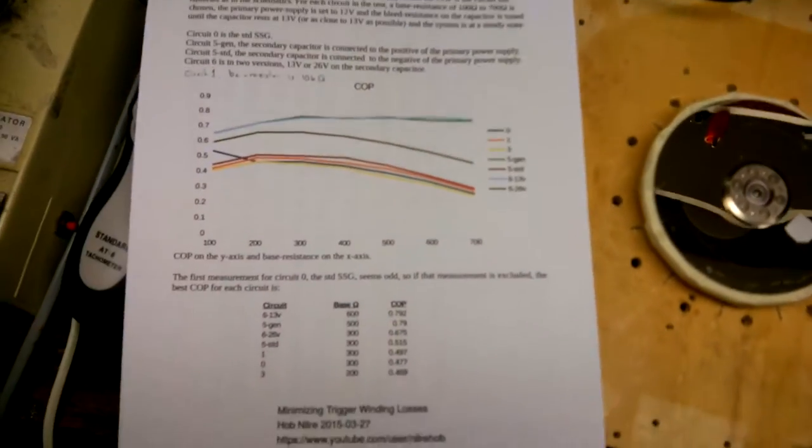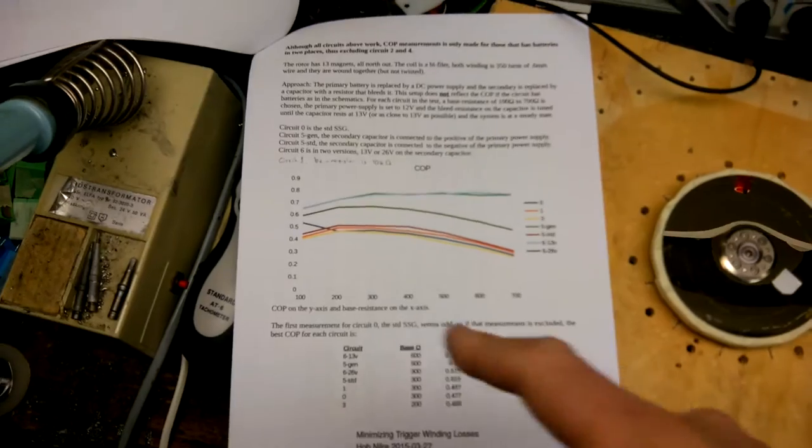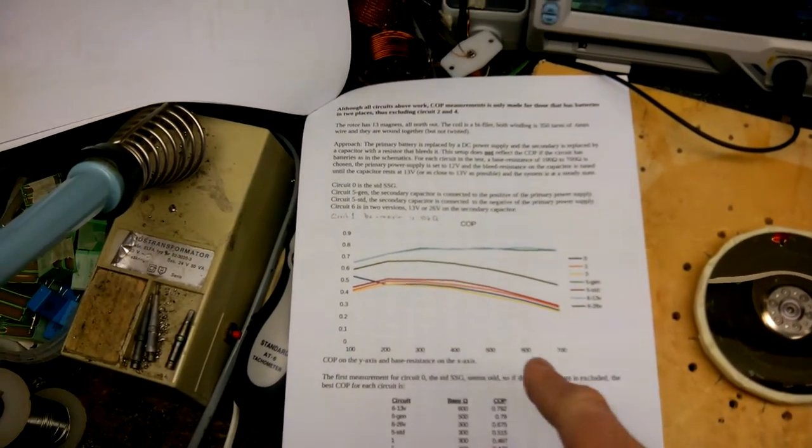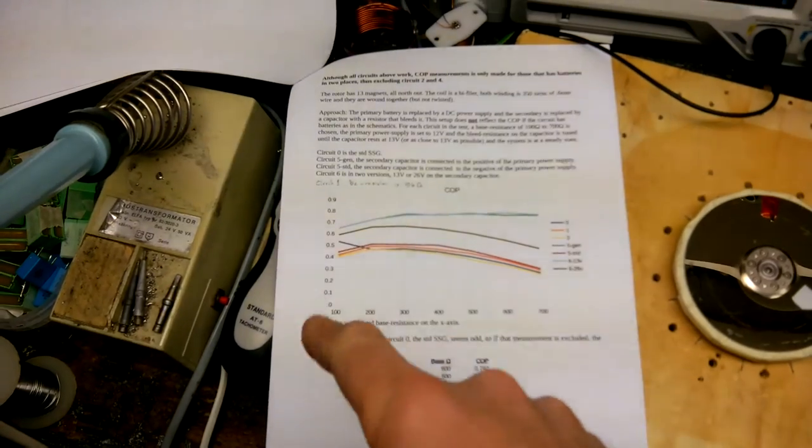Here are the COP for the circuits depending on the base resistor here at the x-axis and the COP at the y-axis.